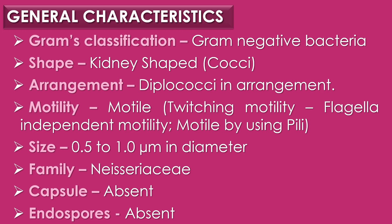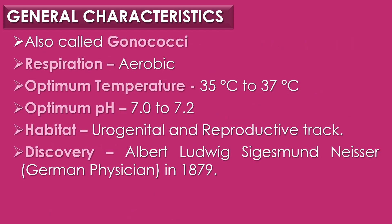The Neisseria gonorrhoeae size ranges from 0.5 to 1 micrometer in diameter and it belongs to the family Neisseriaceae. Capsules are absent and endospores are absent. Its mode of respiration is aerobic. The optimum temperature for cultivation is 35°C to 37°C, and the optimum pH for gonococci is 7 to 7.2.